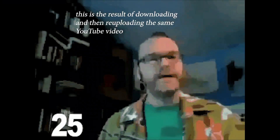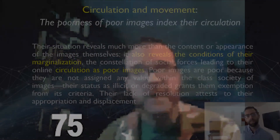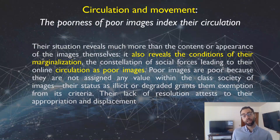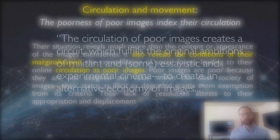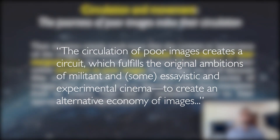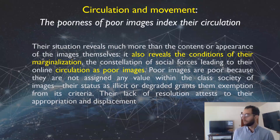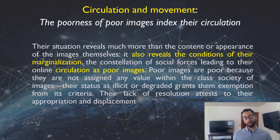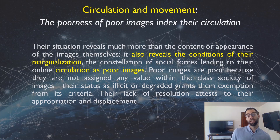Quite literally, poor images become more poor when copied over and over again because compression algorithms lead to degradation. She creates the impression that this index of circulation and movement is a good thing, because it encapsulates their freedom from a hierarchical chain of distribution. She sees the circulation of poor images as almost the masses asserting their own autonomy — sharing images with each other, not passively accepting what a large capitalist institution of Hollywood movie production gives them.